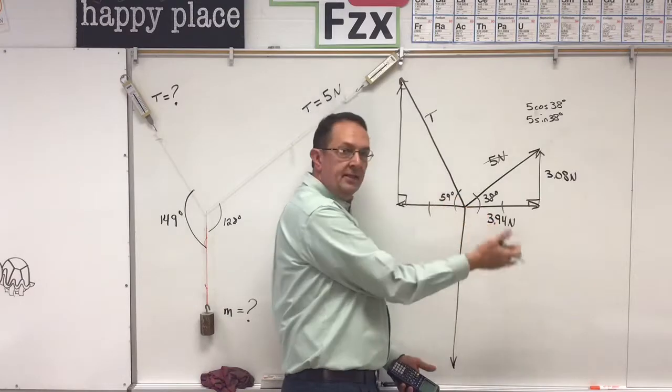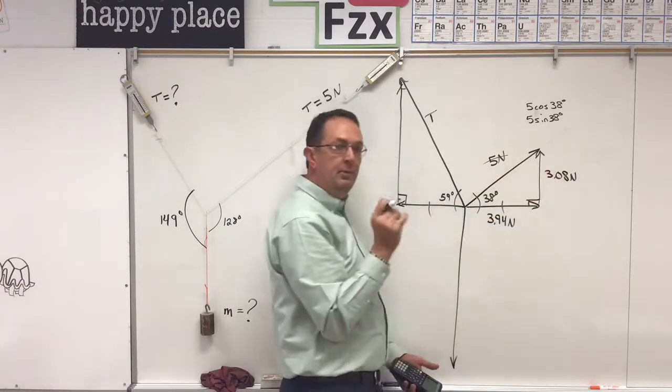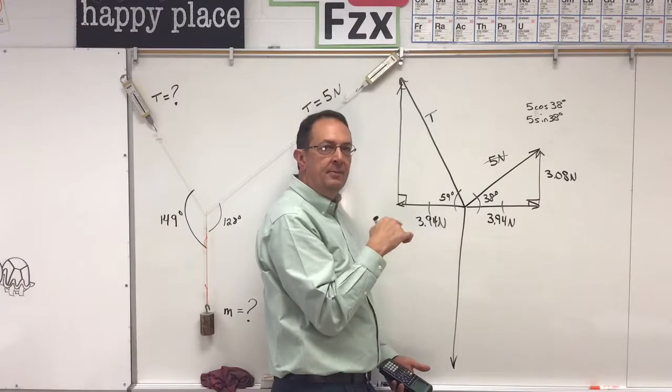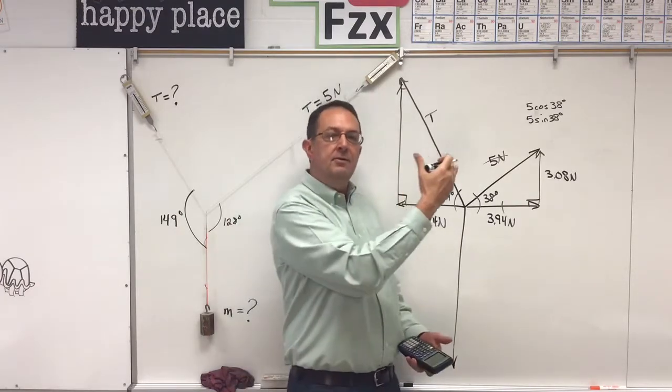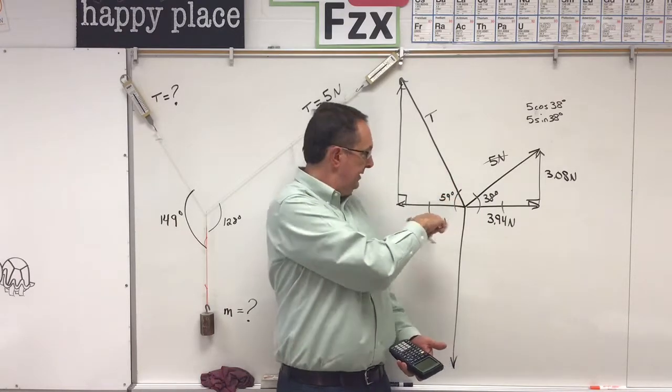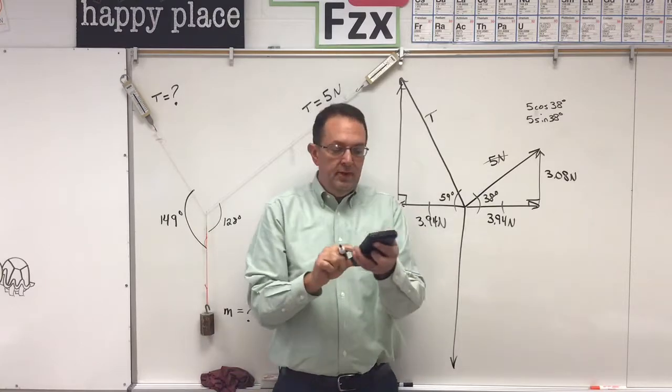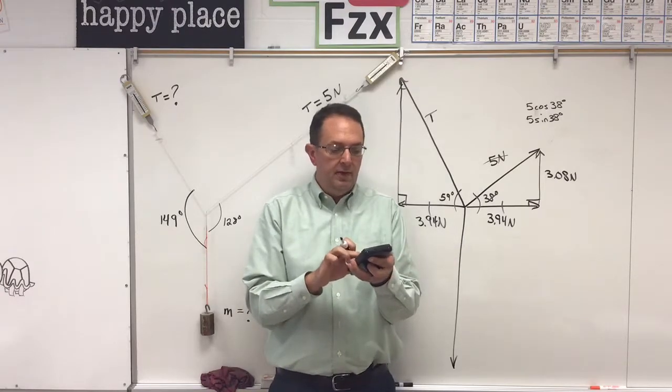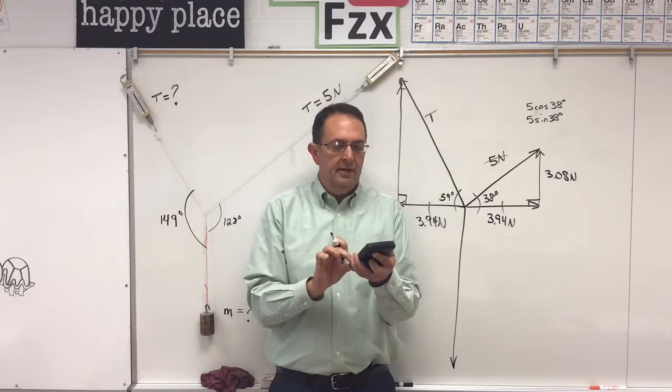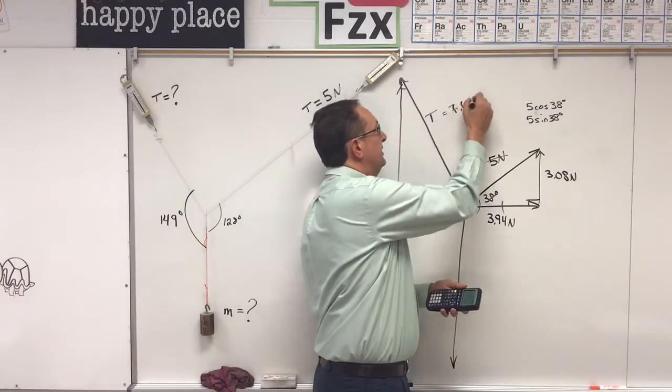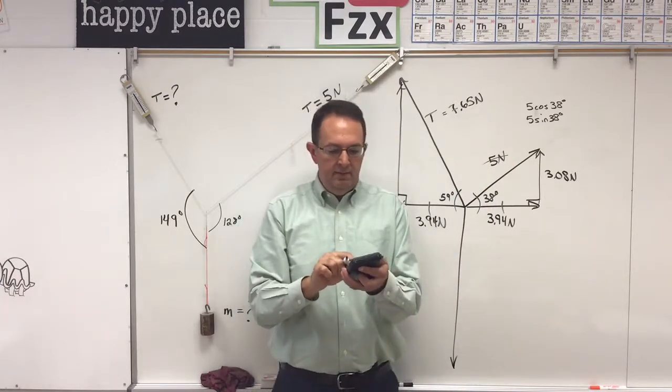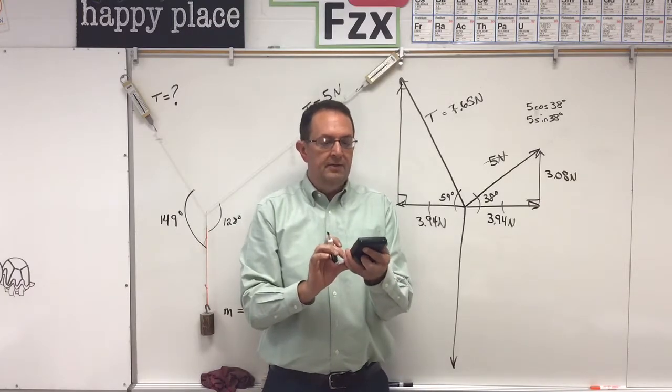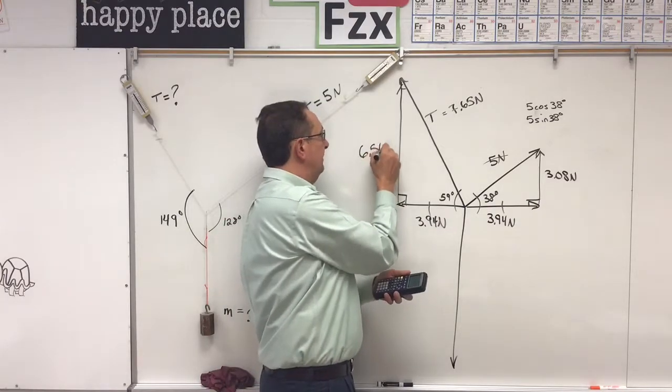So I've done the five cosine 38 to get the 3.94, and the five sine 38 to get that 3.08. Then I can just show the balance, because the X is balanced, 3.94 newtons is that X component, and then if I'm tricky, and I remember that the hypotenuse times the cosine of that angle is going to be this X leg, well then all I have to do is take the 3.94 and divide by the cosine of 59 equals 7.65. This would be 7.65 newtons. And then 7.65 times the sine of 59 degrees gives you 6.56, 6.56 newtons.